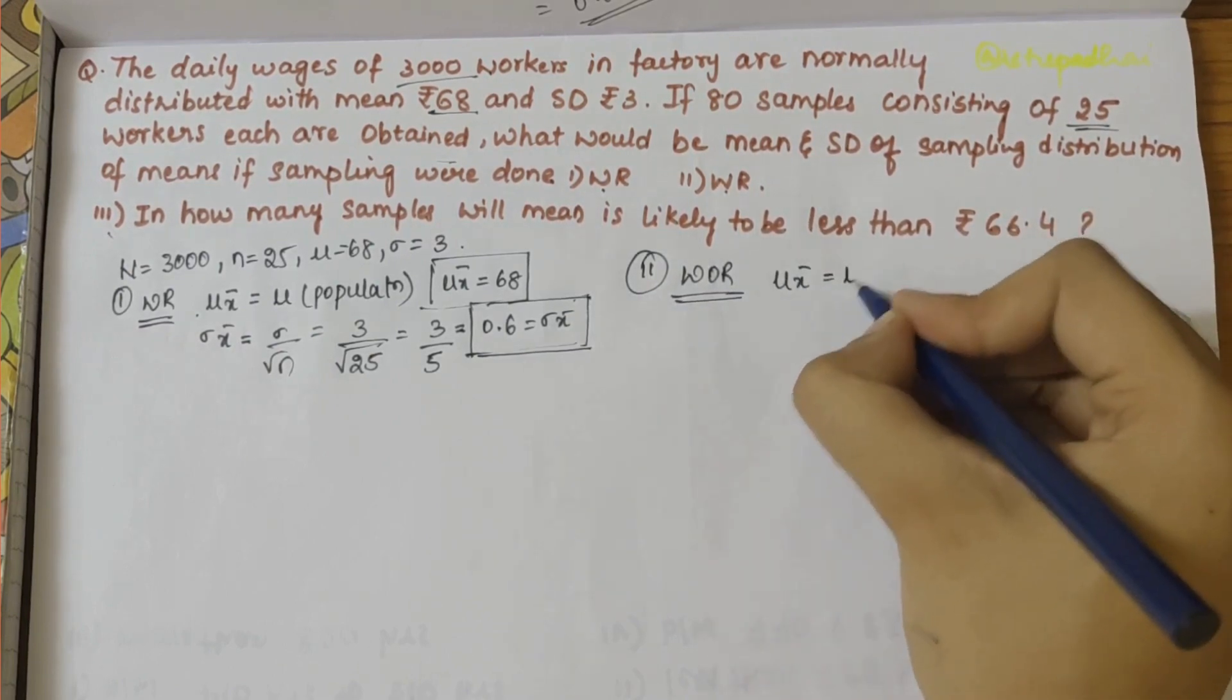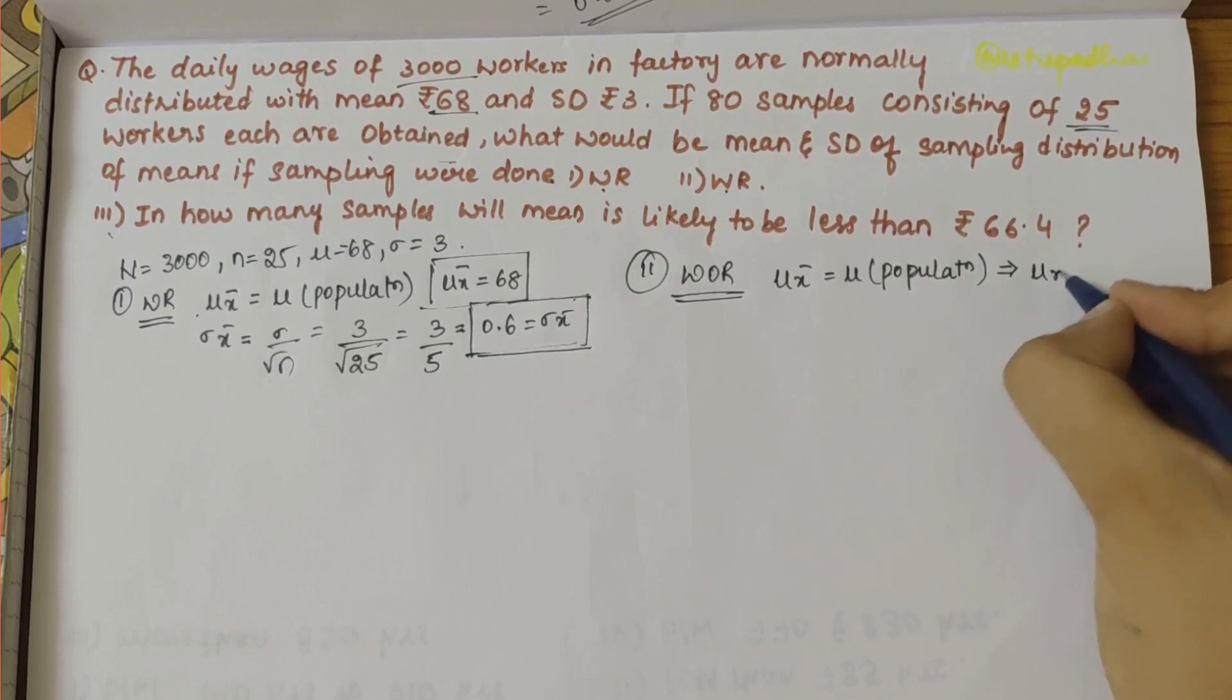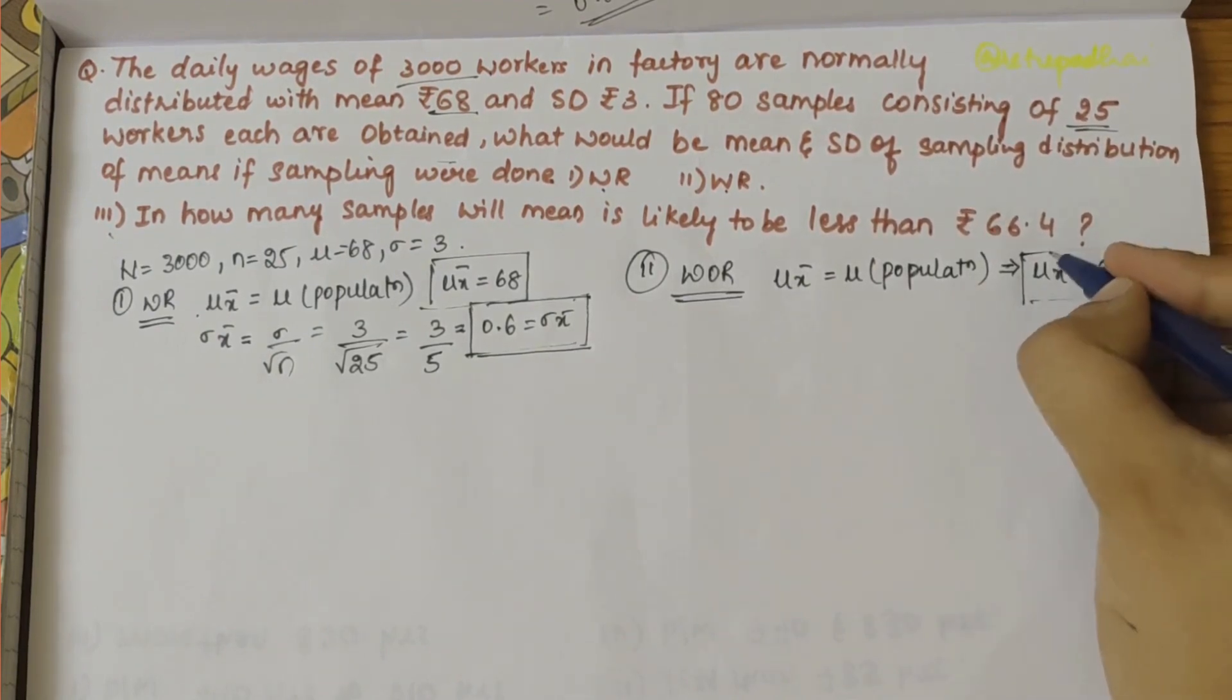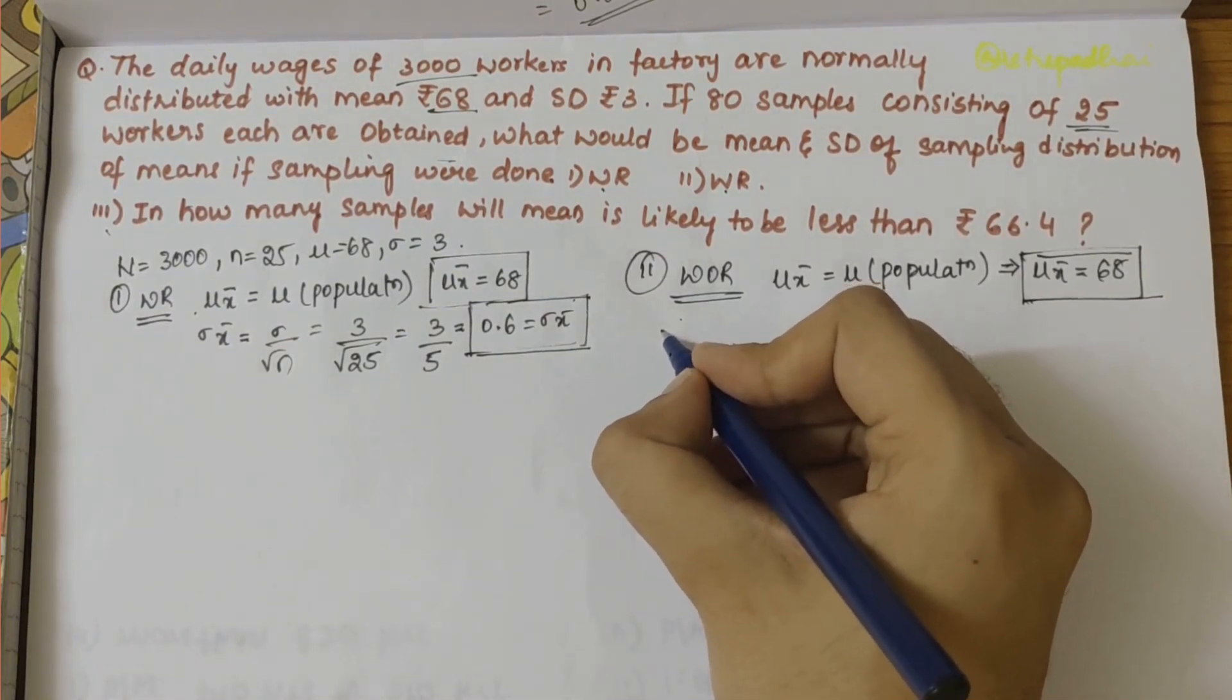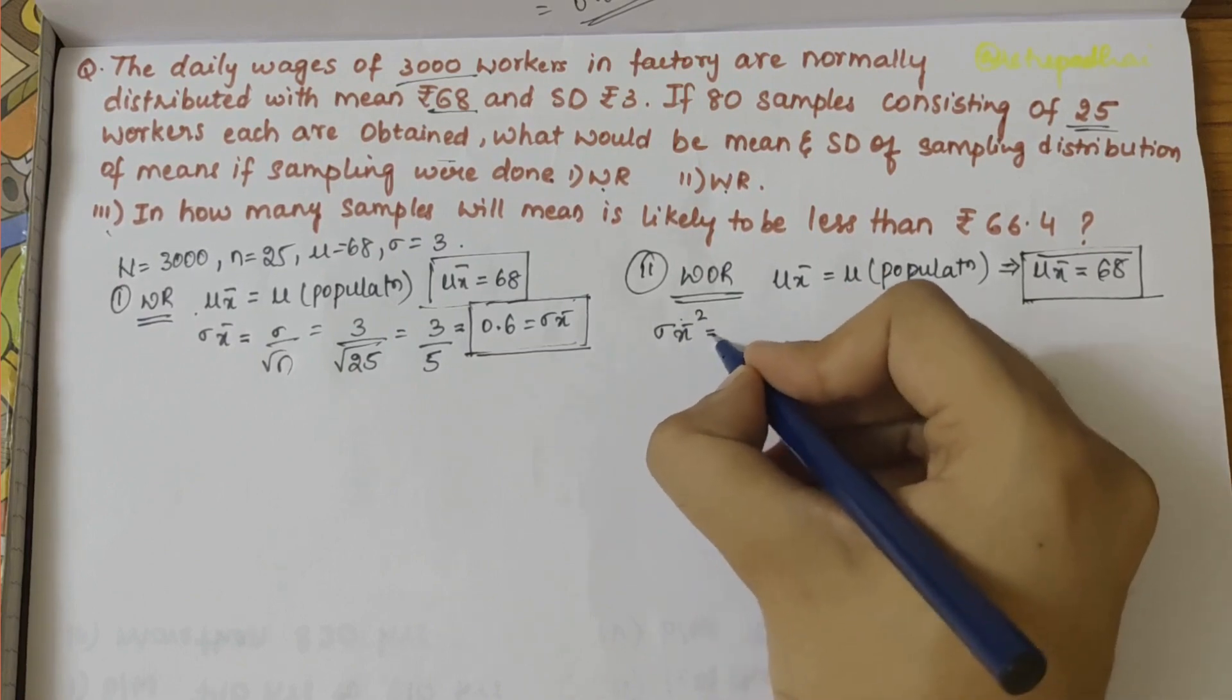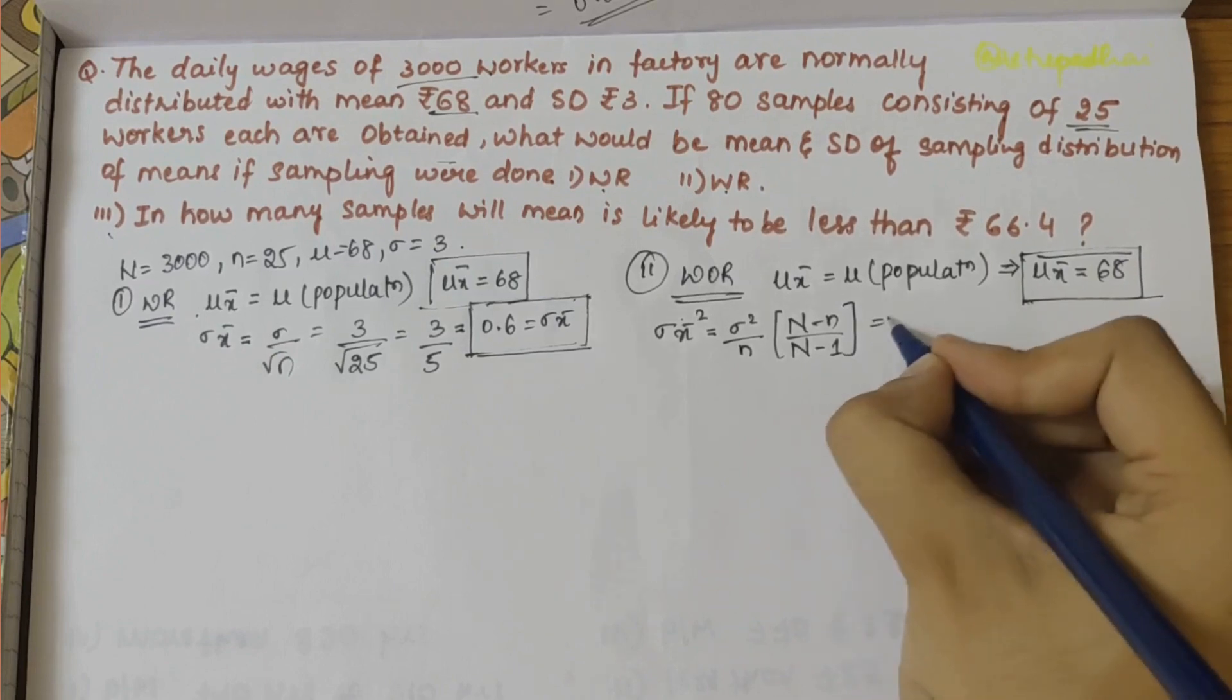Mean for without replacement is again equal to the population mean, that is μ = 68. Next we have the variance part. First let's find out the variance, then we can write the standard deviation. For variance it is σ² / n times (N - n) / (N - 1).